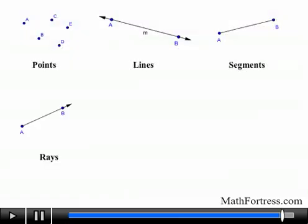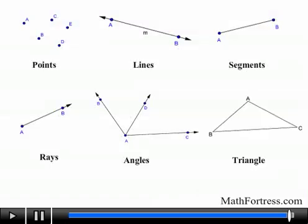We also learned about rays which share the characteristics of a line and a segment. It contains an endpoint in one side and contains an arrow in the other side which extends infinitely in the direction it is facing. When we have two or more rays that share a common point called a vertex, we form angles. And finally, when we connect three line segments together forming three distinct vertices, we create a triangle.